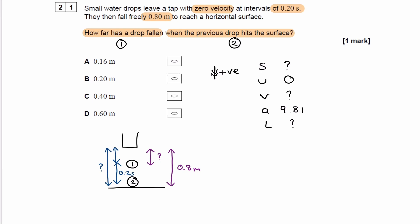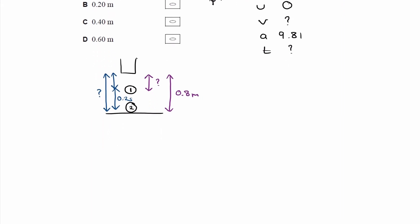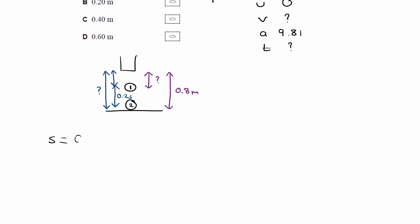Okay, so let's work out how long it takes drop two to fall the full distance of 0.8. This here was for drop one, so we're going to have to draw out a separate SUVAT table. So for drop two, the distance is still 0.8. It's still falling from rest, the final speed we don't know. We're not interested in that. Acceleration is 9.81. Again, I'm considering downwards to be positive still. And the time is what we're interested in.